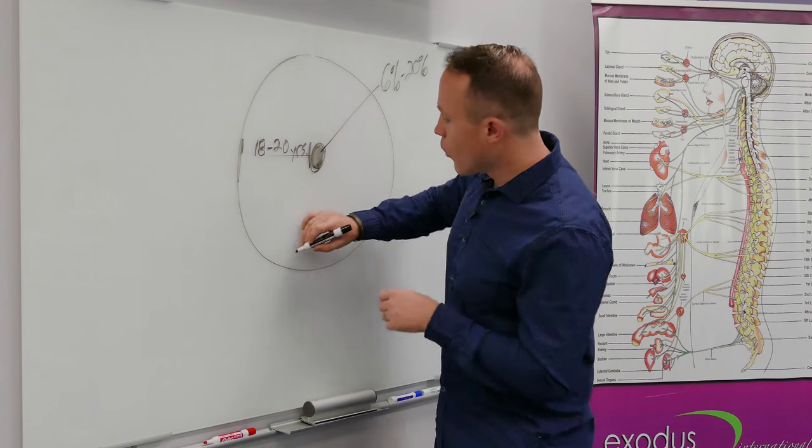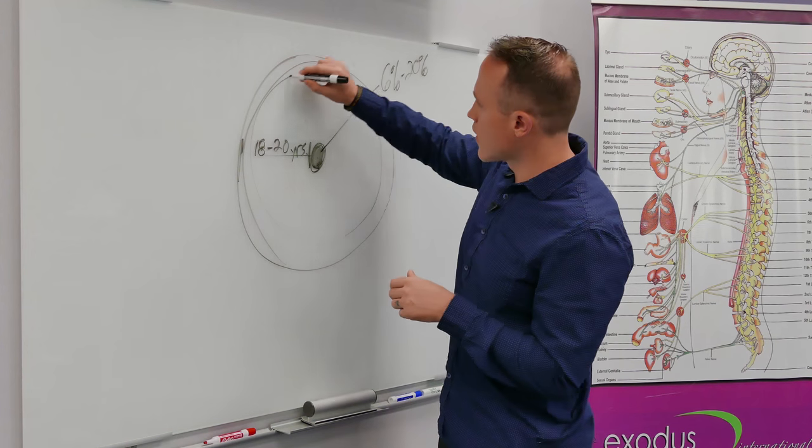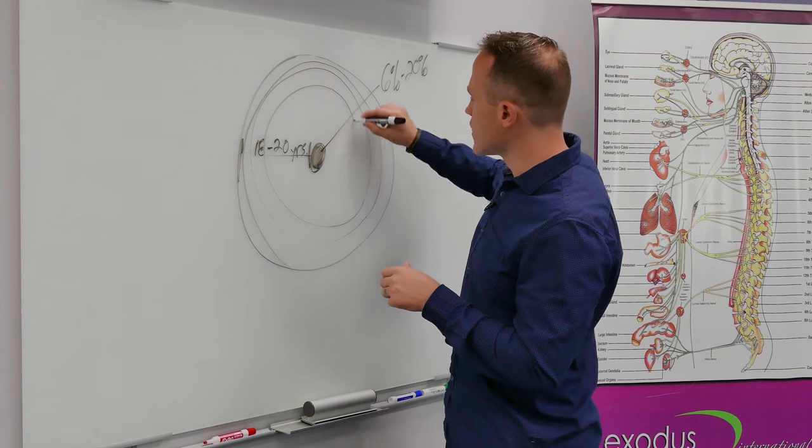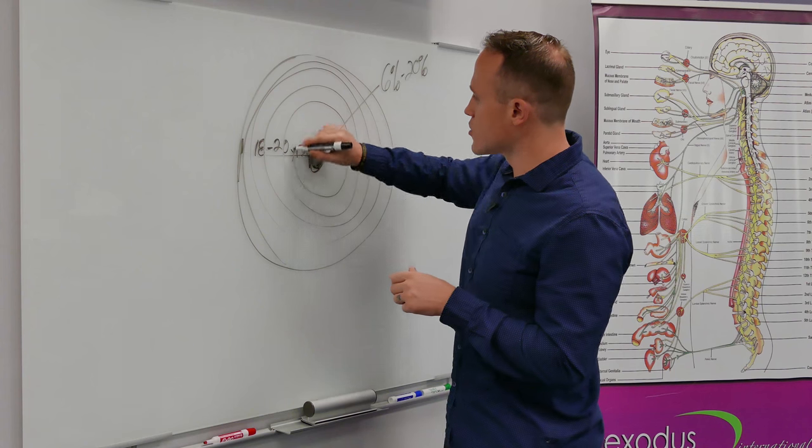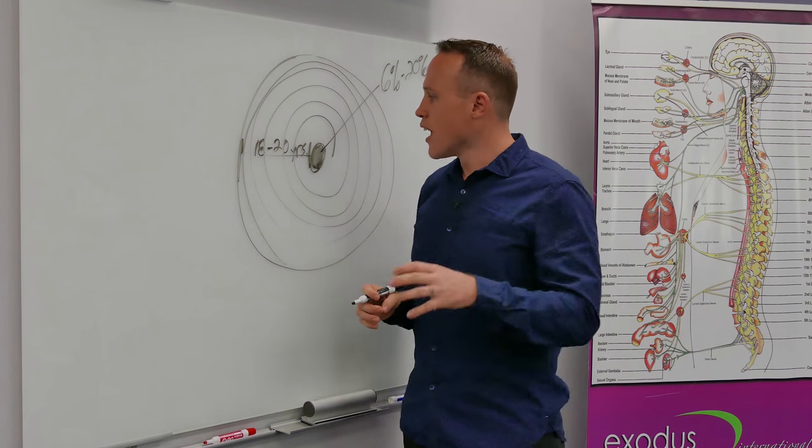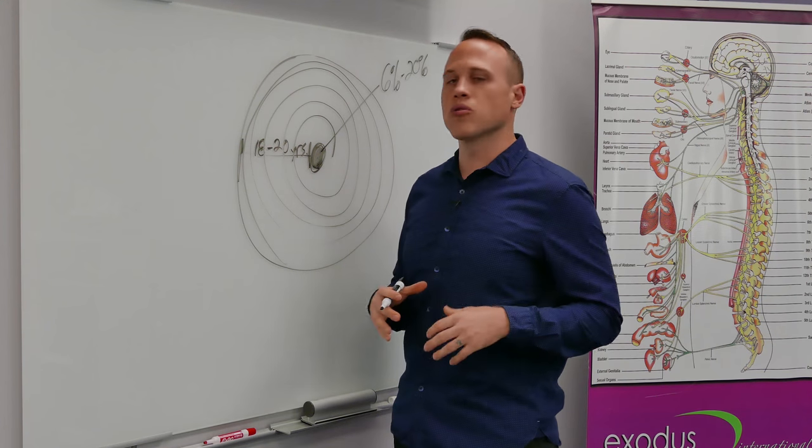And so what happens is that stress comes along - traumas, toxins, and thoughts. Layers build of stress on the nervous system. And then we come down to this last 6 to 20 percent here.